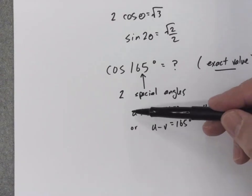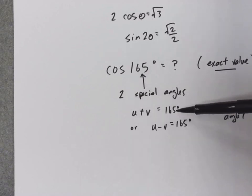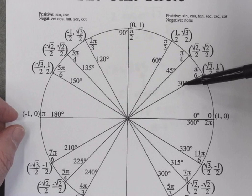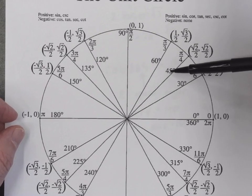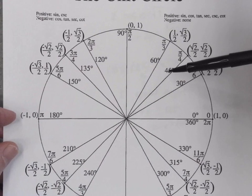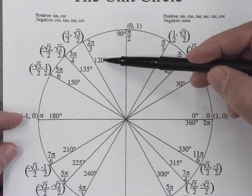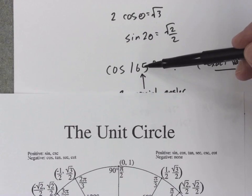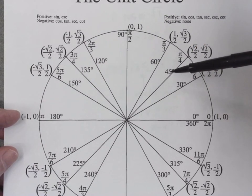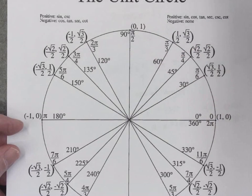Let's look at our special angles and see if we can find two that add together to equal 165. Trial and error: 30 plus 45 is 75 — not what we want. 45 plus 60 is 105. How about 45 plus 120? That's 165! Also, 30 plus 135 is also 165, so I can use either one.